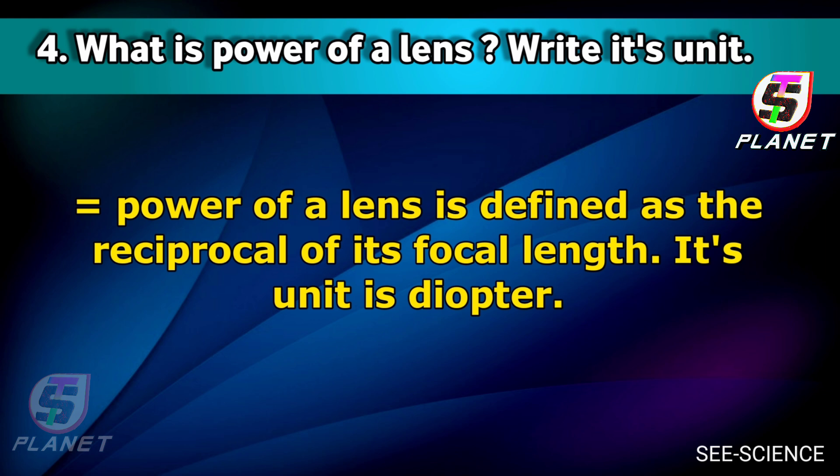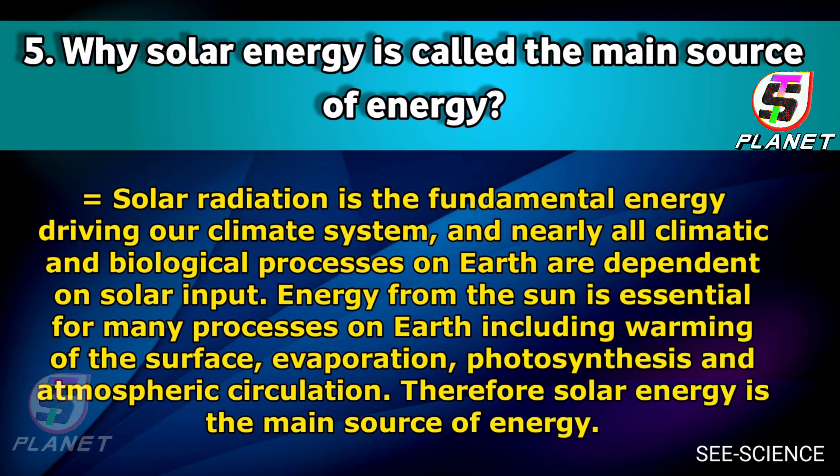Next question: What is the power of a lens? Write its unit. Answer: Power of a lens is defined as the reciprocal of its focal length. Its unit is diopter.